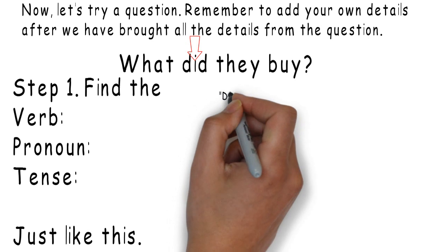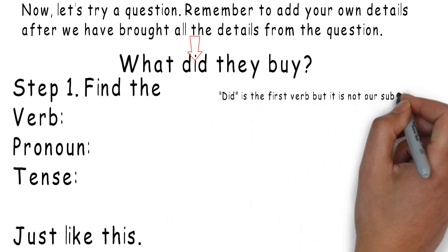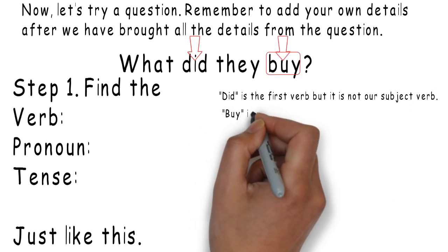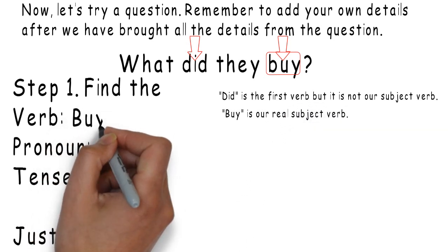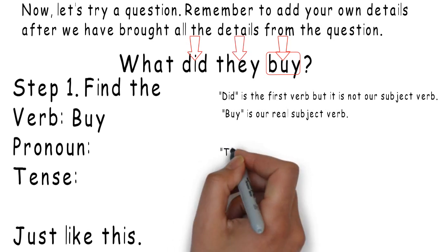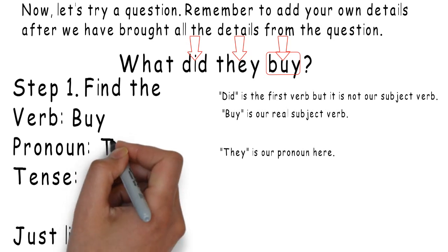Did. Did is the first verb, but it is not our subject verb. Buy. Buy is our real subject verb. So, verb: buy. They. They is our pronoun here. So, pronoun: they.